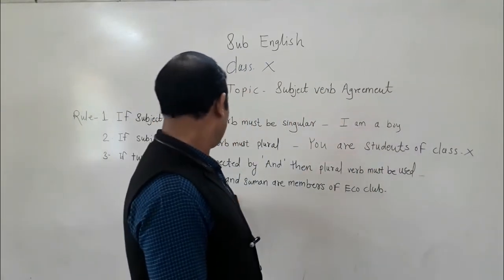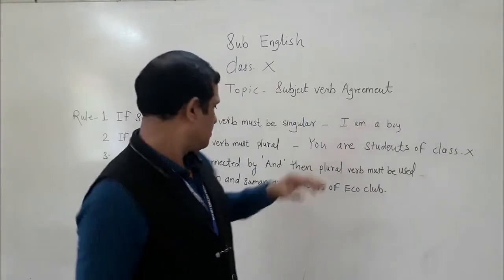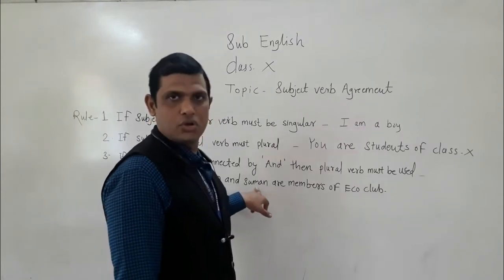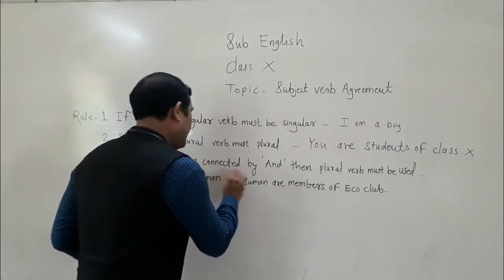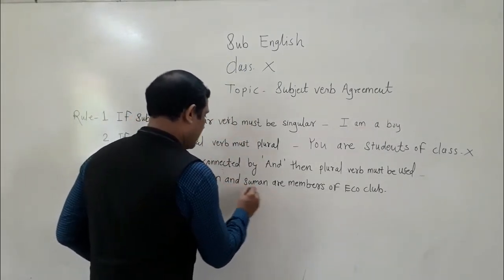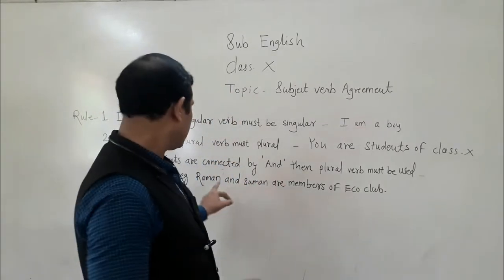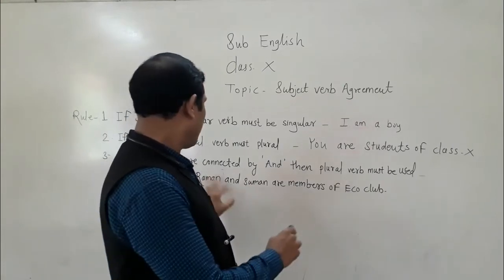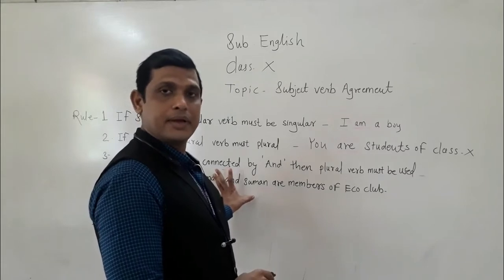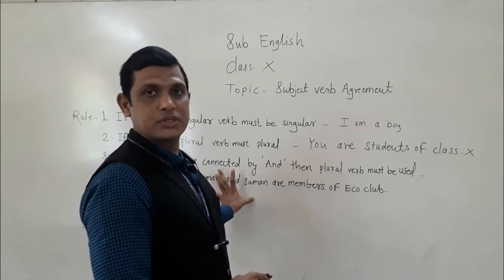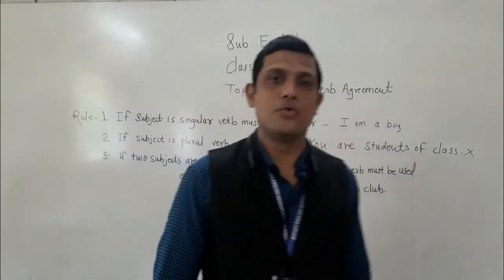For example, 'Raman and Suman are members of the club.' Raman is a singular subject, Suman is also a singular subject, but they are connected by 'and.' When connected by 'and,' they become a plural subject, so we have to use 'are,' which is a plural verb.